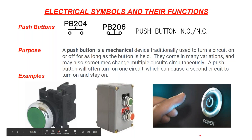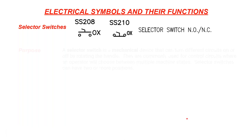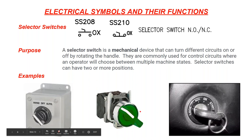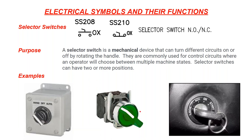A selector switch is a rotary device, similar to a push button, that turns on or off a circuit. A common example is a Hand-Off-Auto (HOA) type selector switch, where a motor can be set to Off, Auto, or Hand/manual mode. Selector switches can also be illuminated. If your car doesn't have push-button start, you're using a selector switch every day to start it.